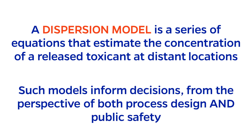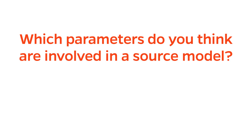These models inform decisions, both from the perspective of process design — for example, whether more engineering controls should be added — and also the perspective of public safety, for example, developing an emergency response plan. Pause the video now to think of as many parameters as you can that should be included in such a dispersion model.